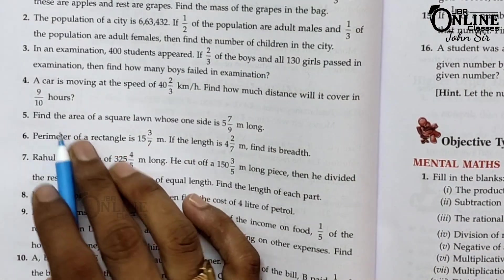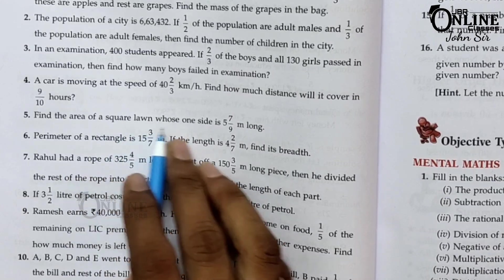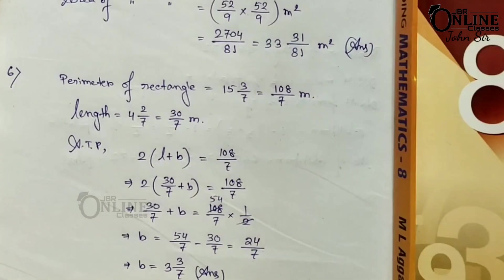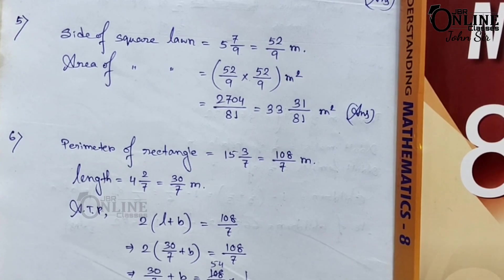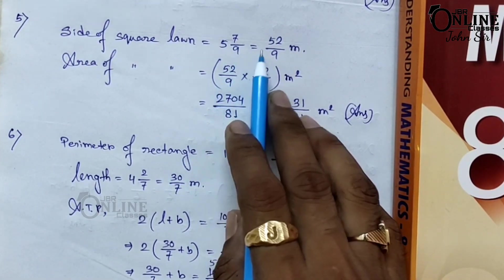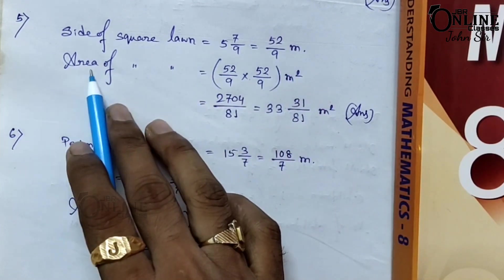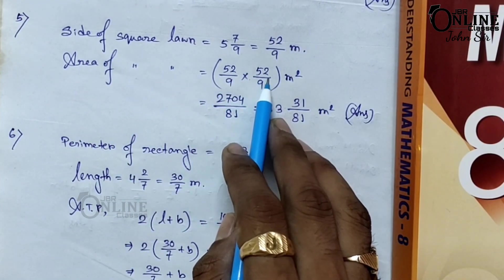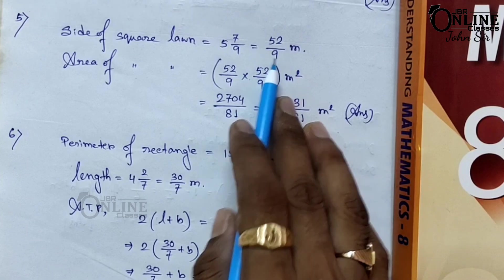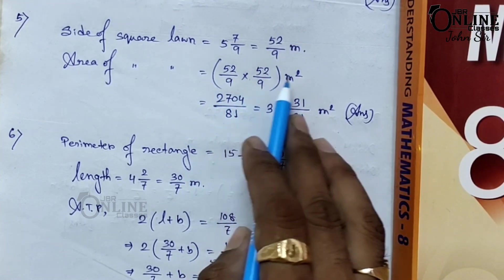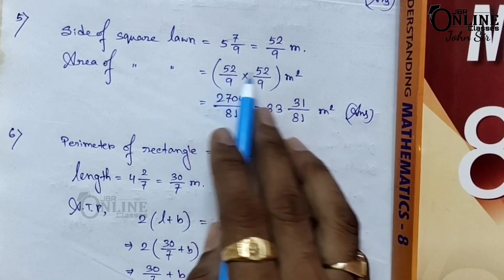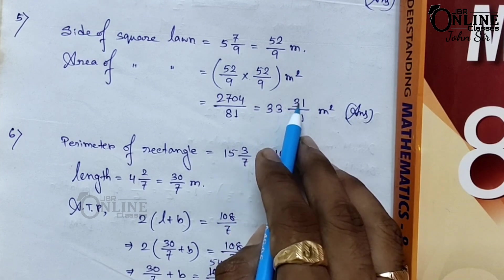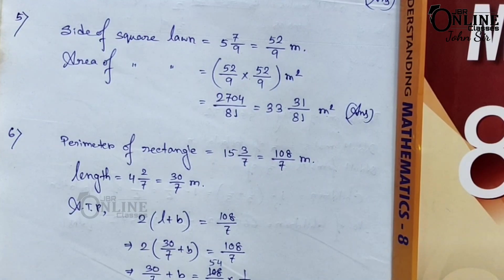Sum number 5: find the area of a square whose one side is 5 and 7/9 meters long. Side equals 5 and 7/9, which is 52/9 meters. Area of the square equals side times side, so 52/9 multiplied by 52/9 meters squared. That is 2704/81, which equals 33 and 31/81 meter squared.